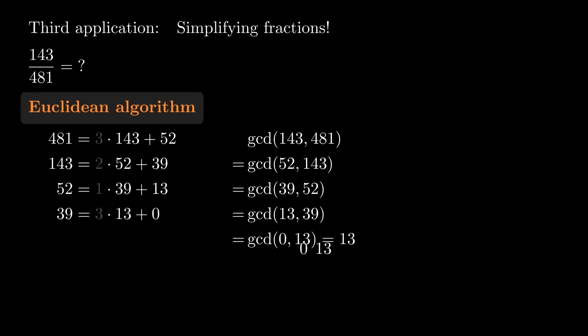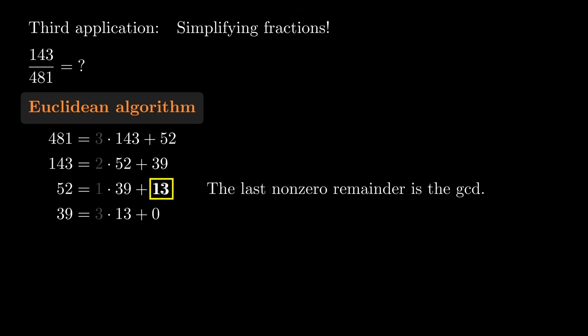13 does actually divide 0 because 13 times 0 is 0. So the GCD is 13. This is how the Euclidean algorithm computes the GCD of two numbers. The last non-zero remainder is the GCD.